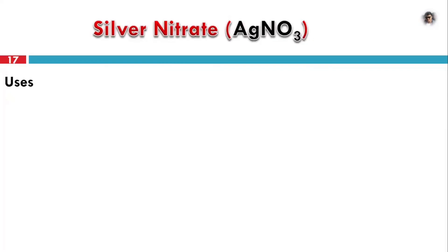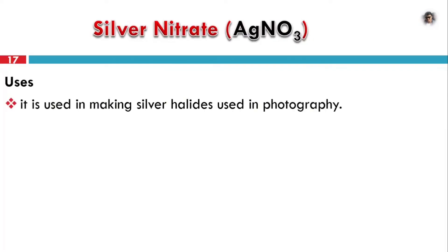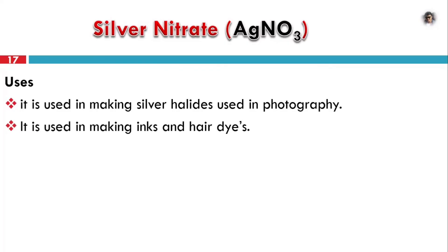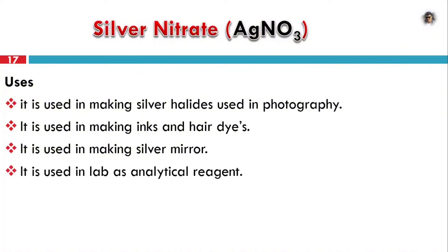Uses of silver nitrate: it is used in making silver layers used in photography. AgNO3 is used in making inks, hair dyes, etc. It is used in making silver mirrors. It is used in the laboratory as an analytical reagent, especially in precipitation tests.